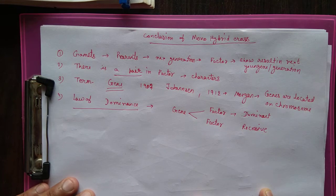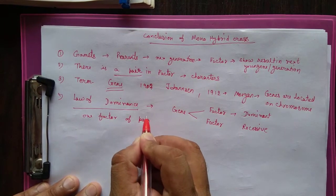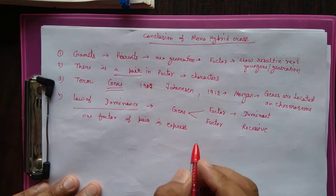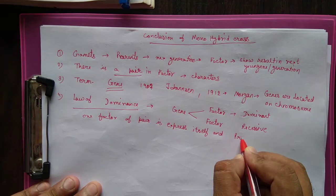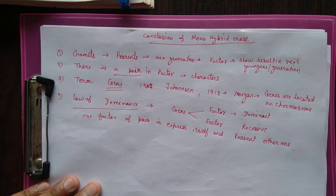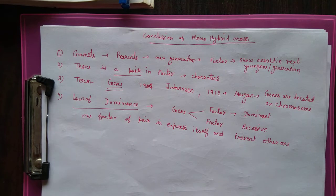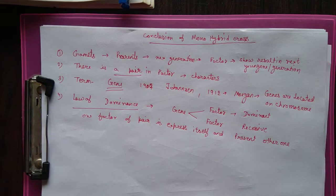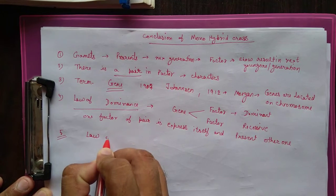The law of dominance means one factor of a pair expresses itself and prevents the other one. For example, taking the example of tallness: capital T and small t — in a hybrid, only the capital T can express its character, so the resulting plant is tall. The small t, which is the recessive gene, cannot express its character.